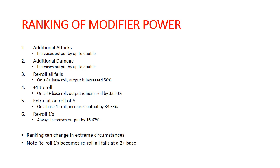At the bottom of the ranking: rerolling ones to hit or save. Rerolling ones always increases your output by 16 and two-thirds percent, no matter what your roll is — it's a flat percentage increase. Even on a two-up, rerolling ones still only increases you by 16.67%, though it's also effectively rerolling all fails at the same time, so it's still really powerful in that scenario. That's one of the things that gets people confused — getting Archaon to reroll his save when you can easily get him to a two-plus makes him virtually invincible.